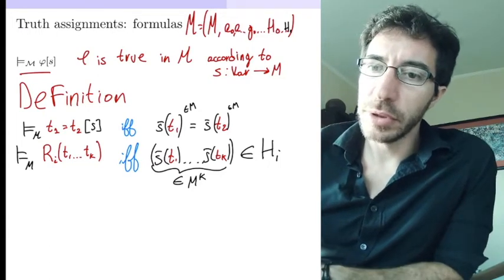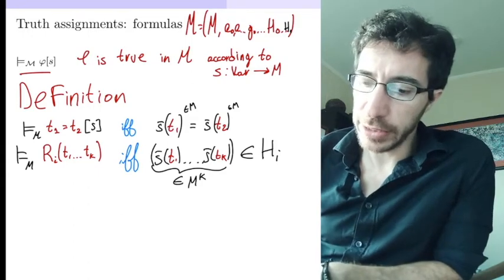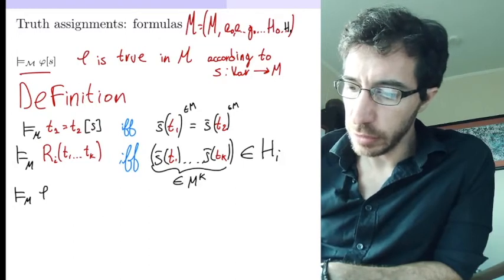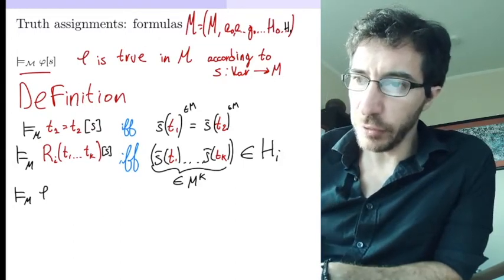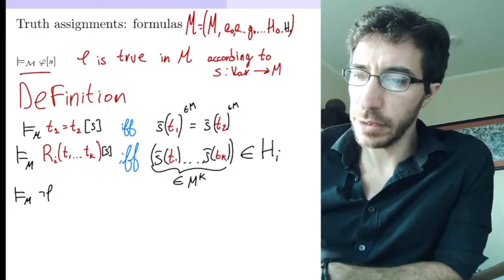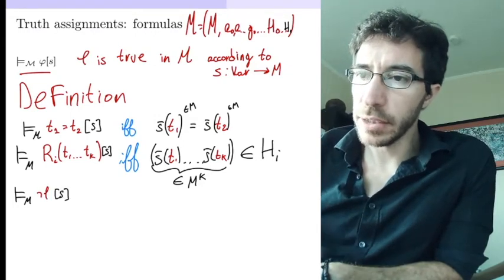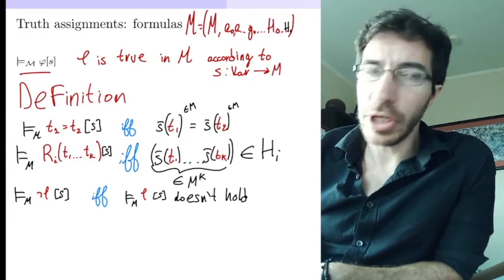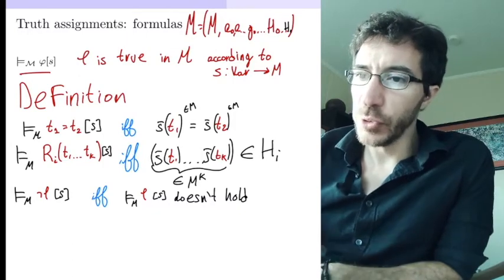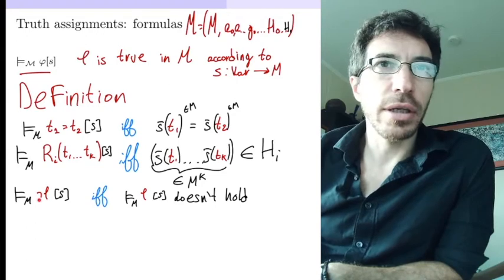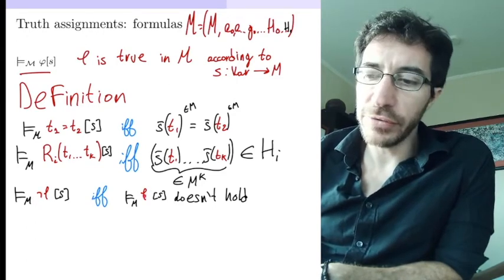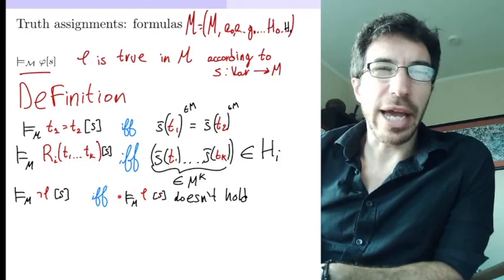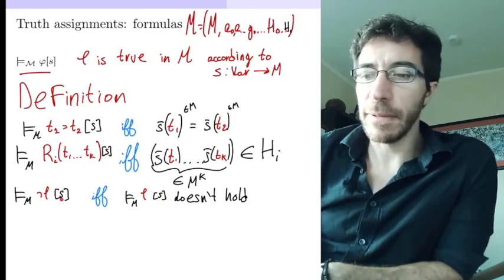These definitions so far are for the atomic formulas. Now we are going to start defining truth by recursion. A formula of the form ¬φ is going to be true according to s if and only if it's not the case that φ is true. So I'm defining truth on ¬φ to be the opposite of whatever it is on φ. φ is a smaller formula than ¬φ — it was built one step before we put the negation — so we can assume we know how to interpret φ. Then we define what it means for ¬φ to be true, and it's the opposite.